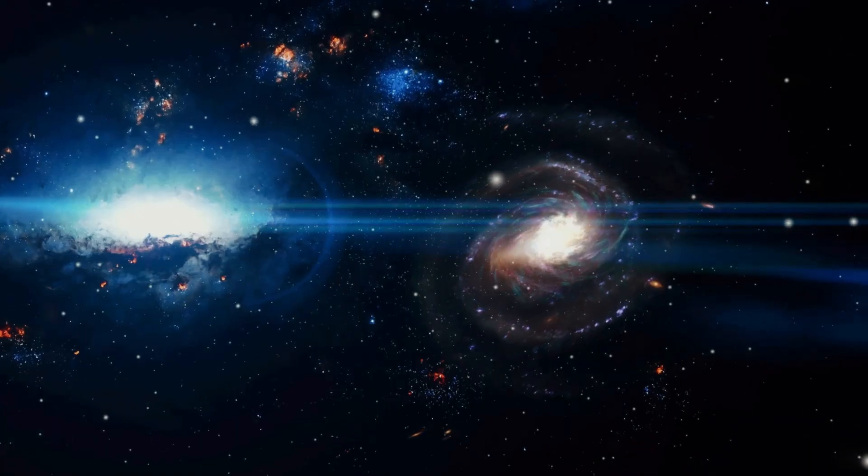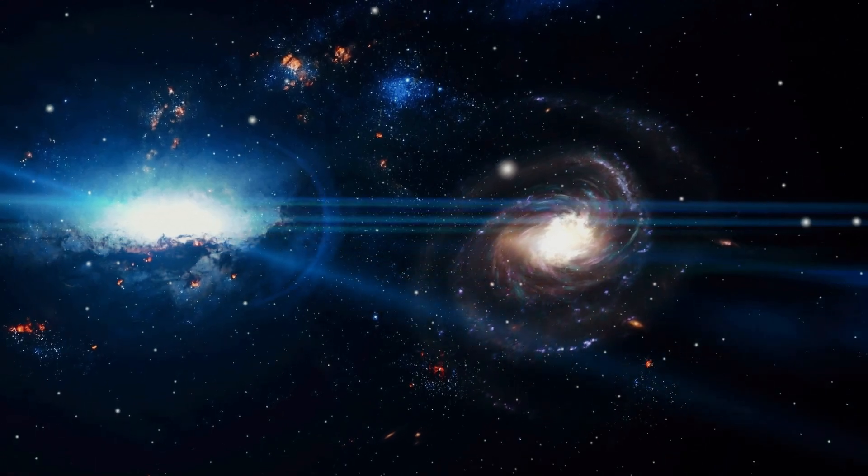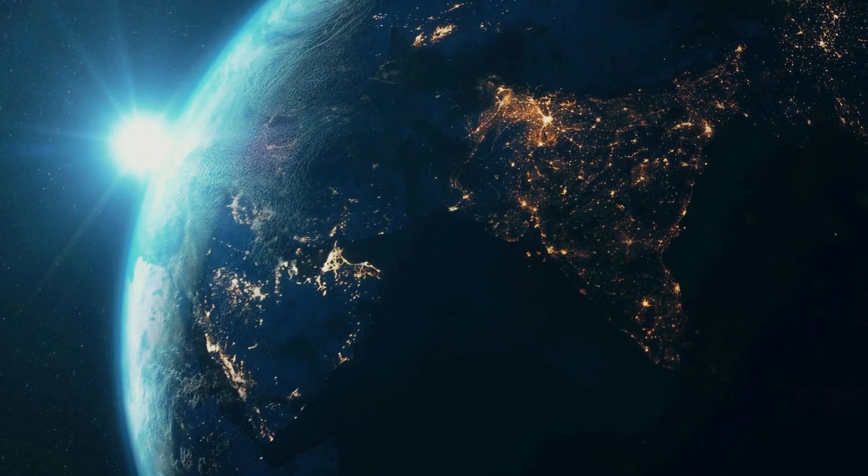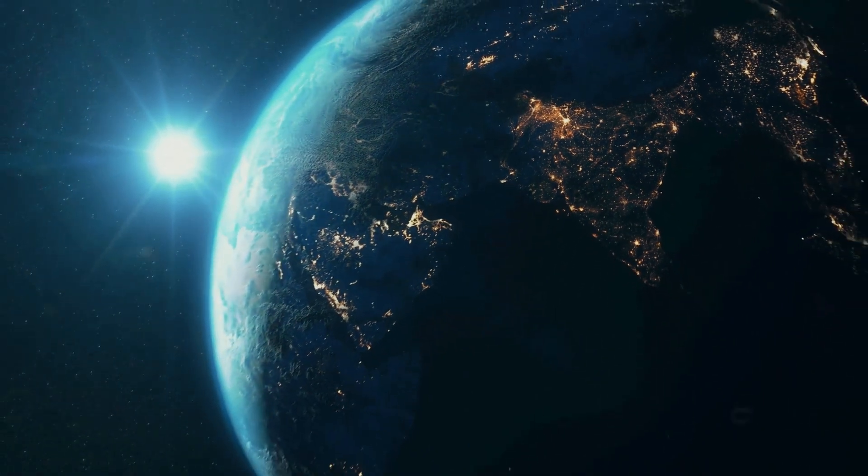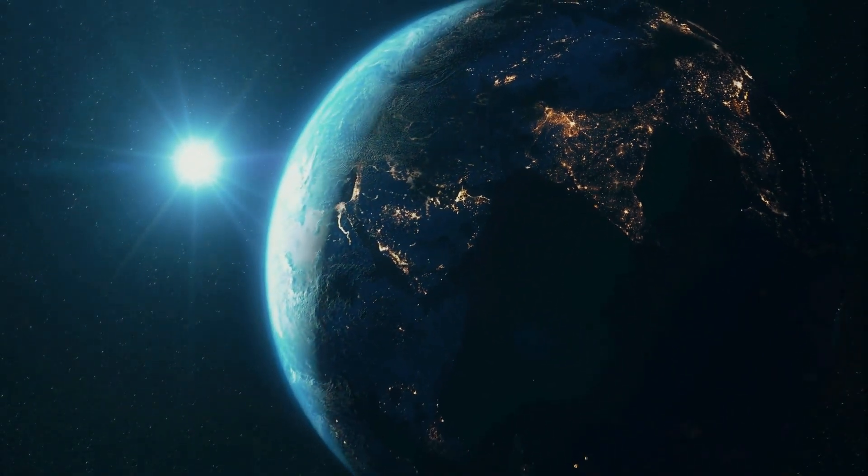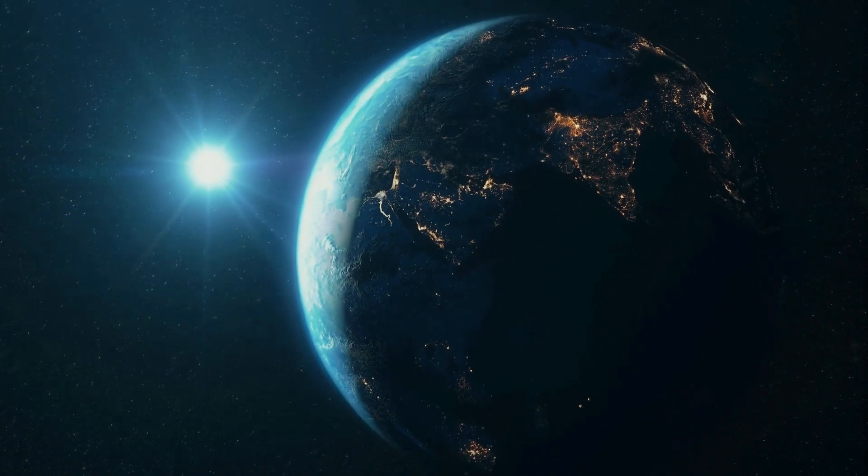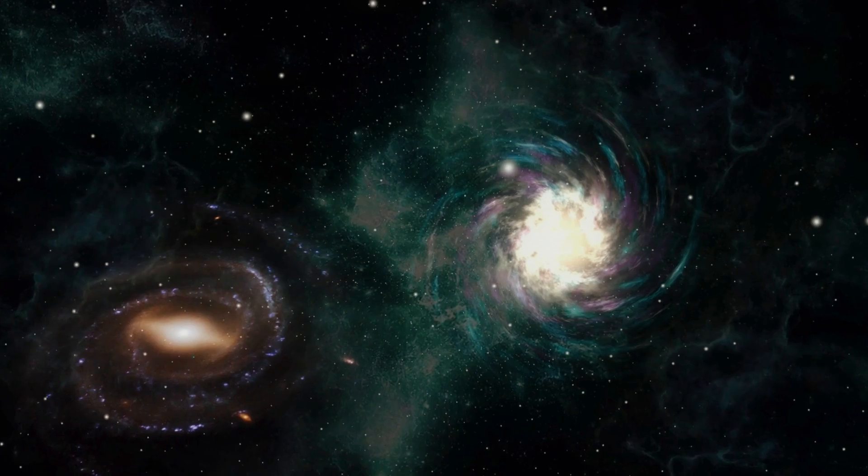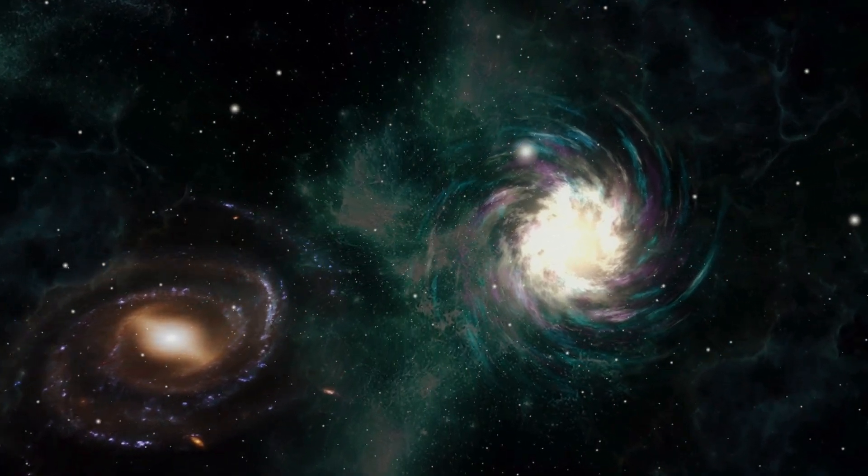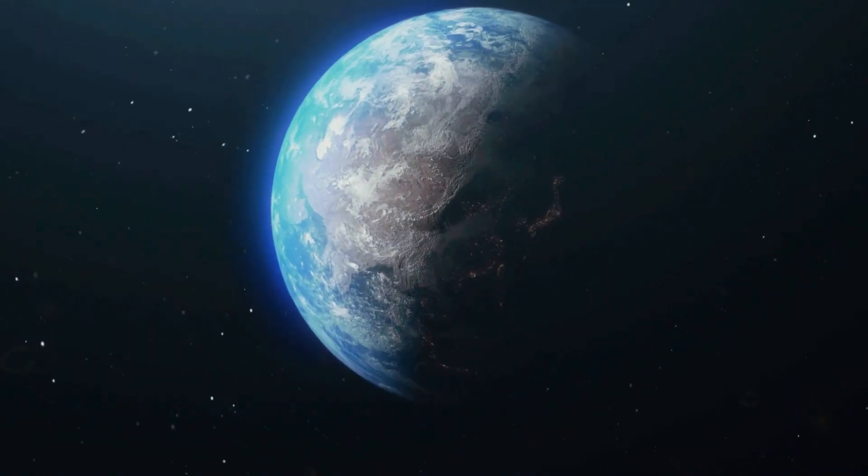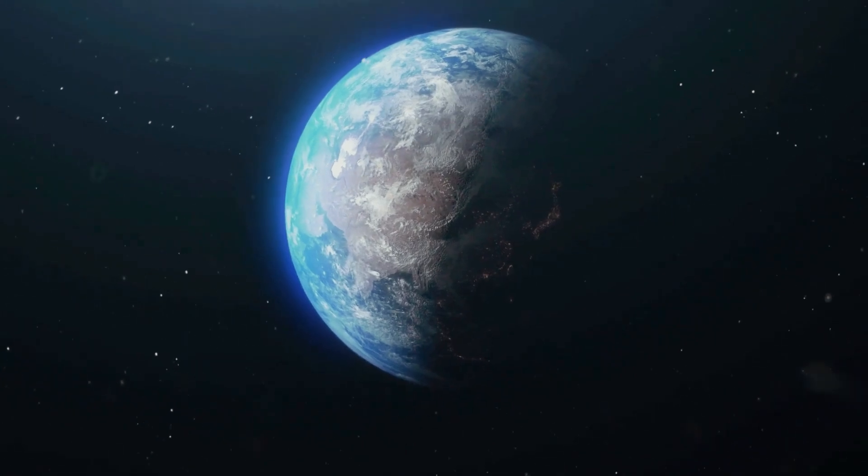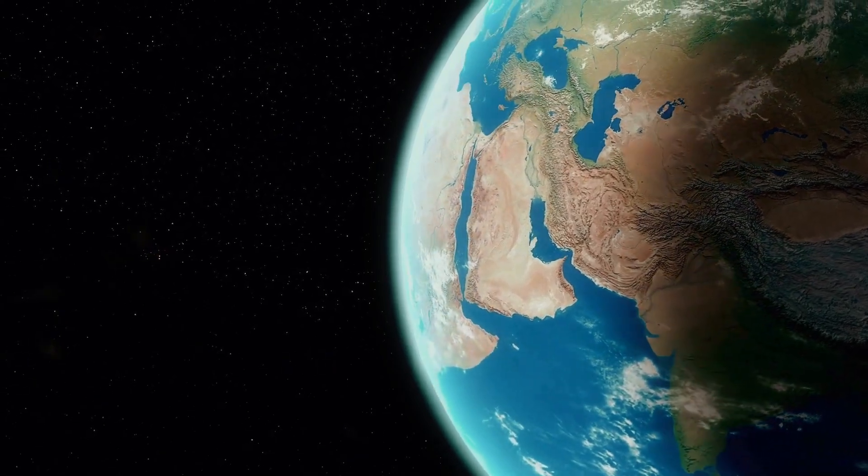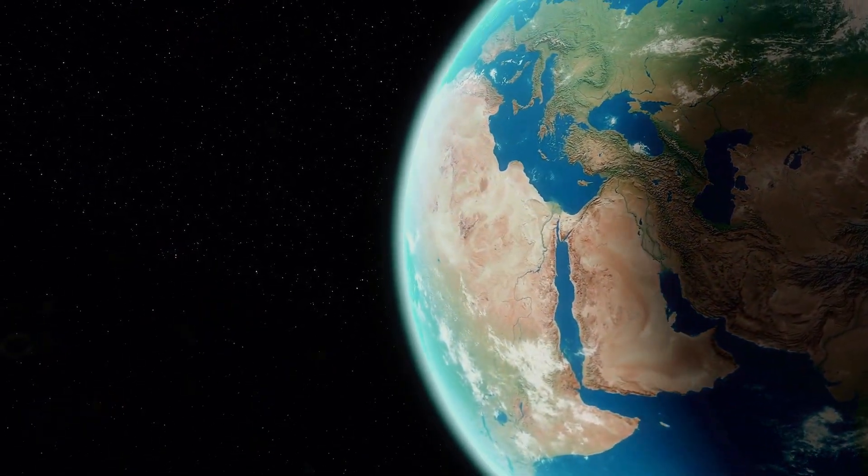As galaxies collide and chaos unfolds across the cosmos, what exactly happens to Earth? Our planet, snug in the arms of the solar system, seems fragile when you consider the scale of a galactic collision. If the Milky Way and Andromeda collide, the gravitational forces unleashed could disrupt Earth's orbit, potentially flinging us into deep space or even sending us hurtling toward the sun. But before we get ahead of ourselves, let's break it down.